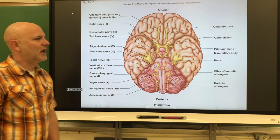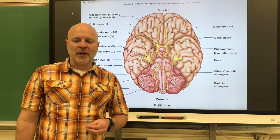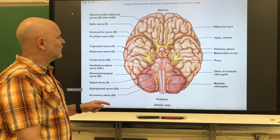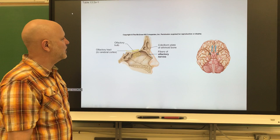Cranial nerves are nerves that arise from the brain. We have 12 pairs of cranial nerves and they all arise from the brain stem — either the midbrain, pons, or the medulla oblongata. Let's go through each of them.